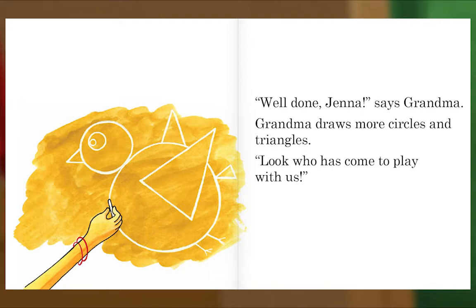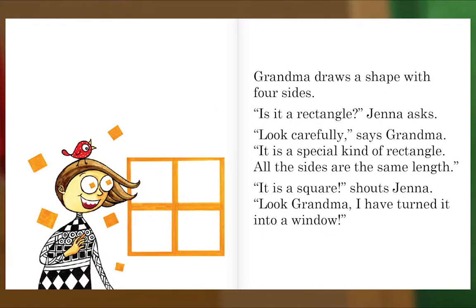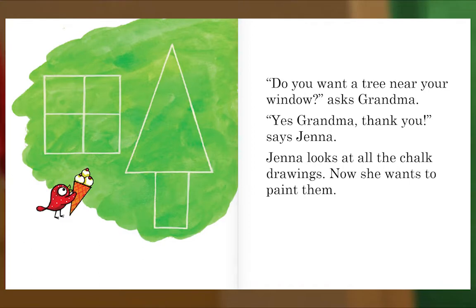Grandma draws a shape with four sides. Is it a rectangle, Jenna asks. Look carefully, says grandma. It is a special kind of rectangle — all the sides are the same length. It is a square, shouts Jenna. Look, grandma, I have turned it into a window! Do you want a tree near your window, asks grandma. Yes, grandma, thank you, says Jenna. Jenna looks at all the chalk drawings — now she wants to paint them.